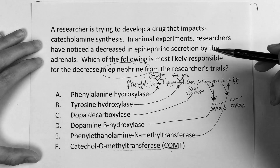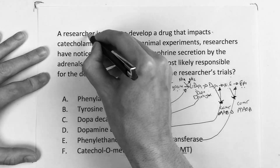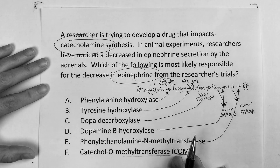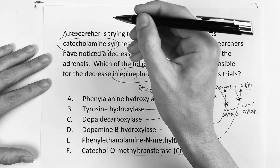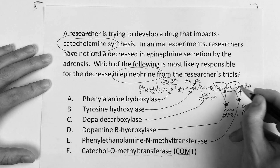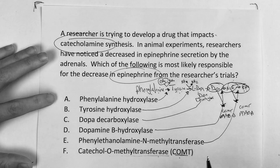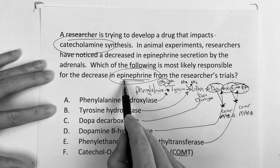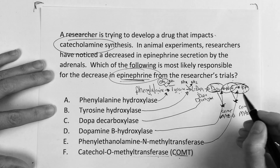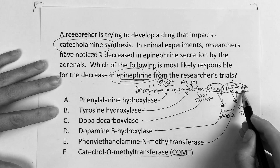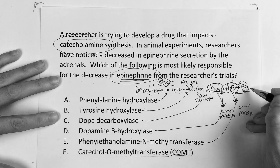So back to this question — it's talking about impacts on catecholamine synthesis. Our main catecholamines in this setting are dopamine, norepinephrine, and epinephrine. When they say there's a decrease in epinephrine specifically — they're not saying a decrease in norepinephrine or DOPA — you have to go straight to it and take one step back. Which is the key enzyme that converts norepinephrine to epinephrine?